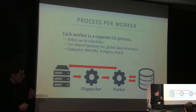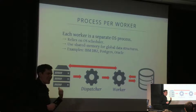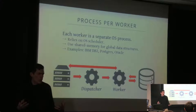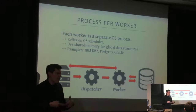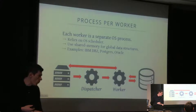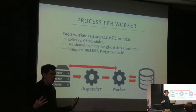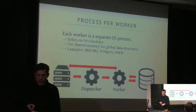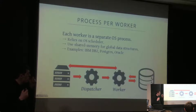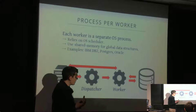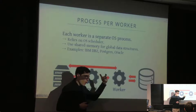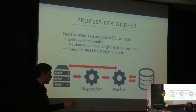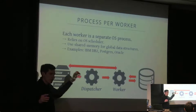This process-per-worker approach was most common in systems from the 1980s and 1990s because threading support wasn't what it is now. Back then there were many Unix variants — Solaris, HP-UX, Minix, BSDs — without consistent threading packages. You could reliably assume fork() worked across operating systems, but threading code written for one OS might not work on another. This is why older systems like DB2, Postgres, and Oracle use this architecture.